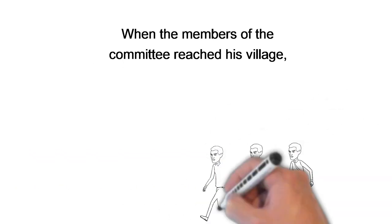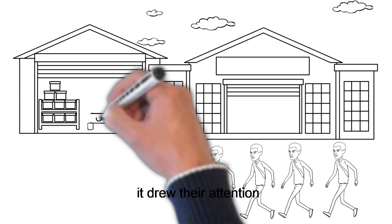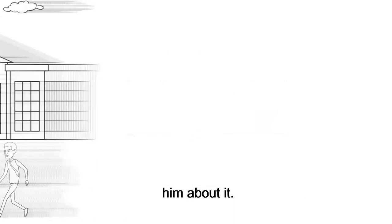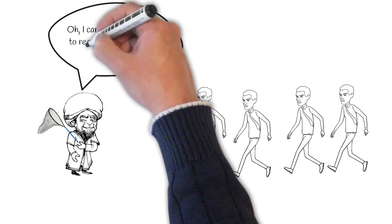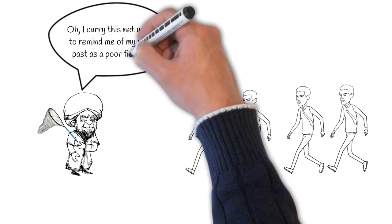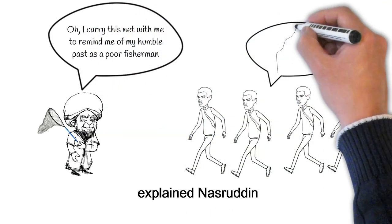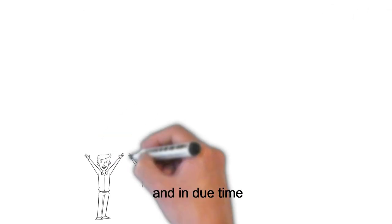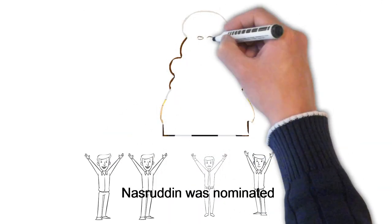When the members of the committee reached his village, it drew their attention and they questioned him about it. Oh, I carry this net with me to remind me of my humble past as a poor fisherman, explained Nasruddin. The committee was impressed and in due time, Nasruddin was nominated as a kazi.